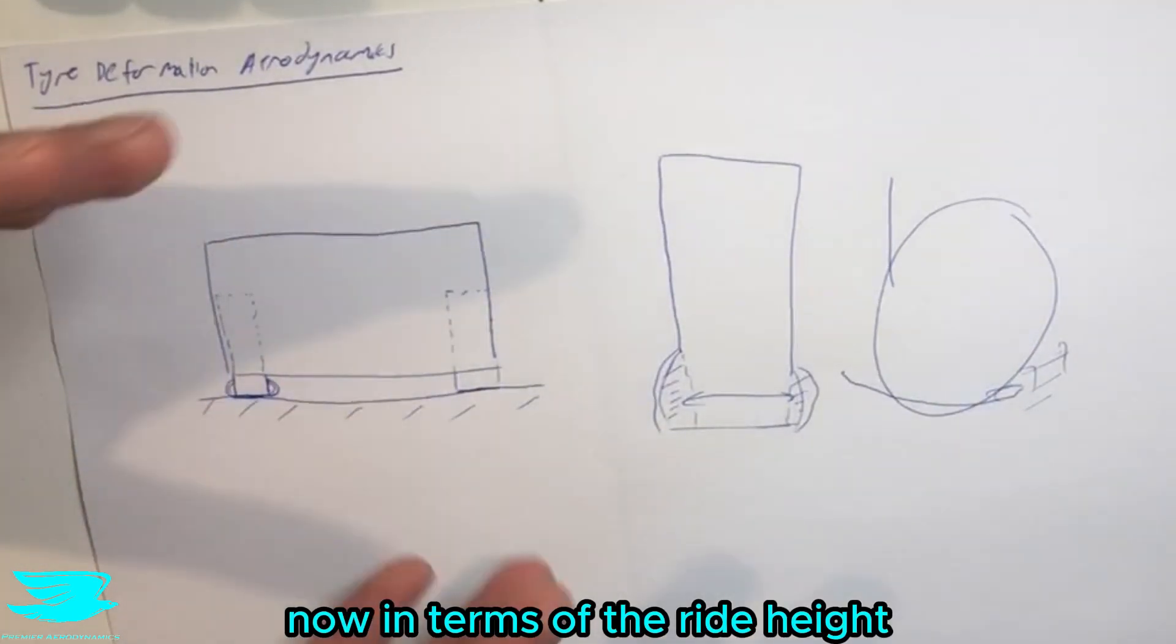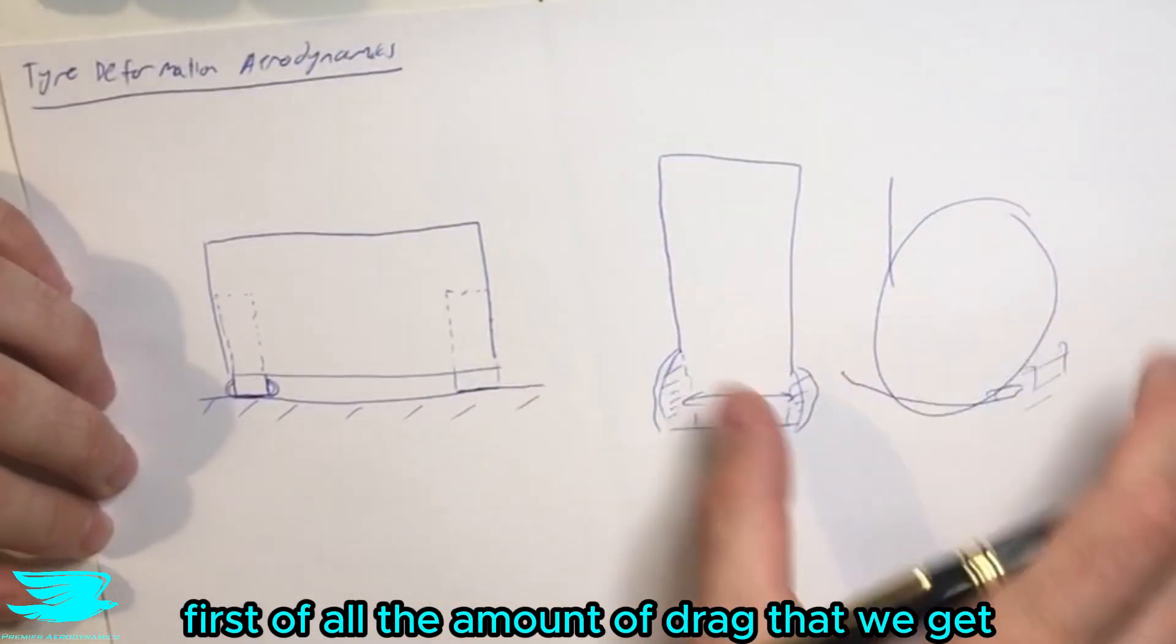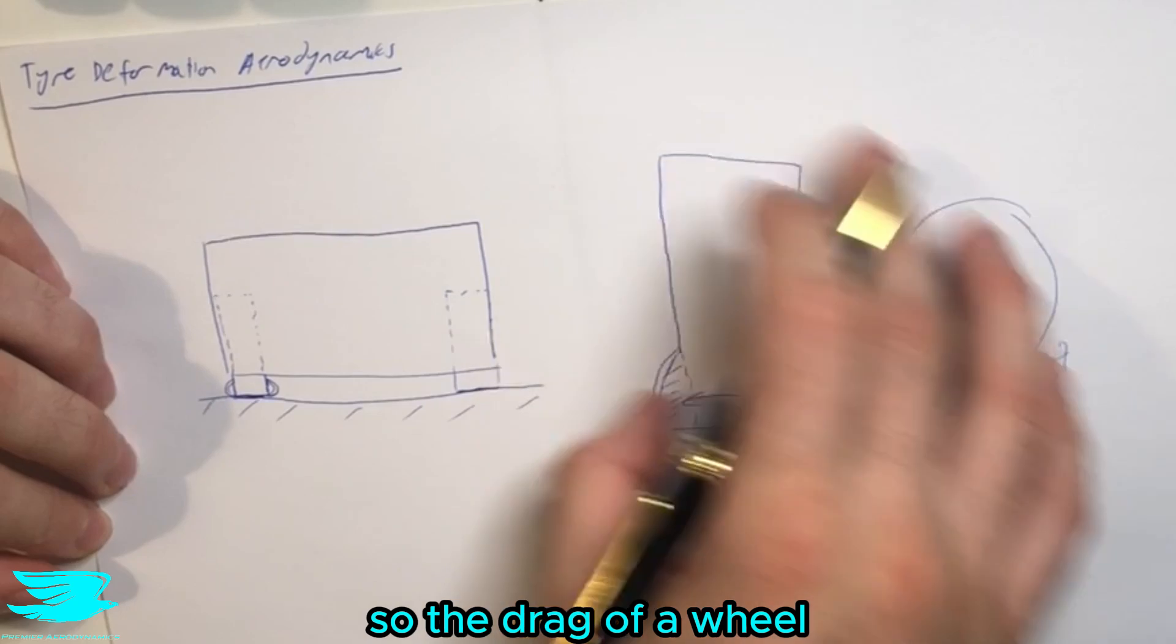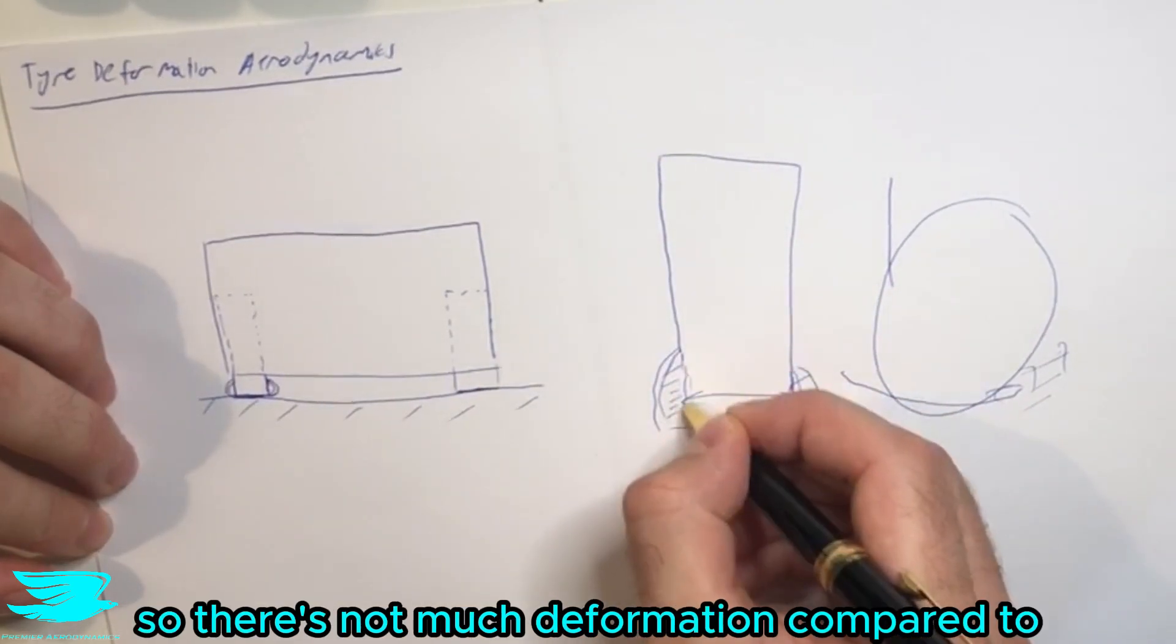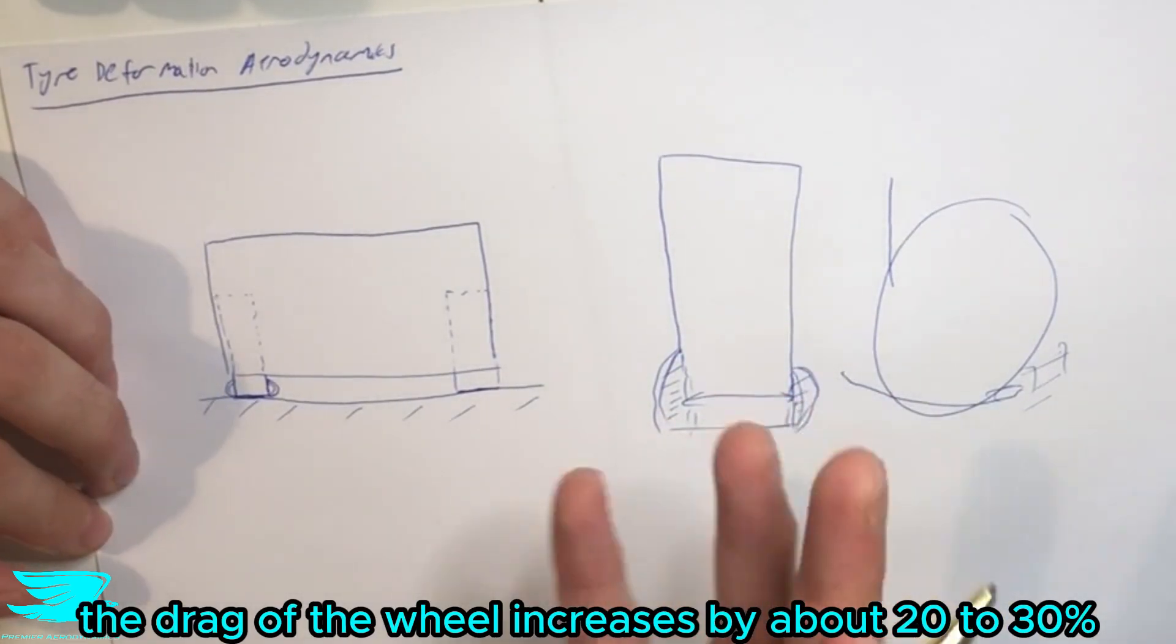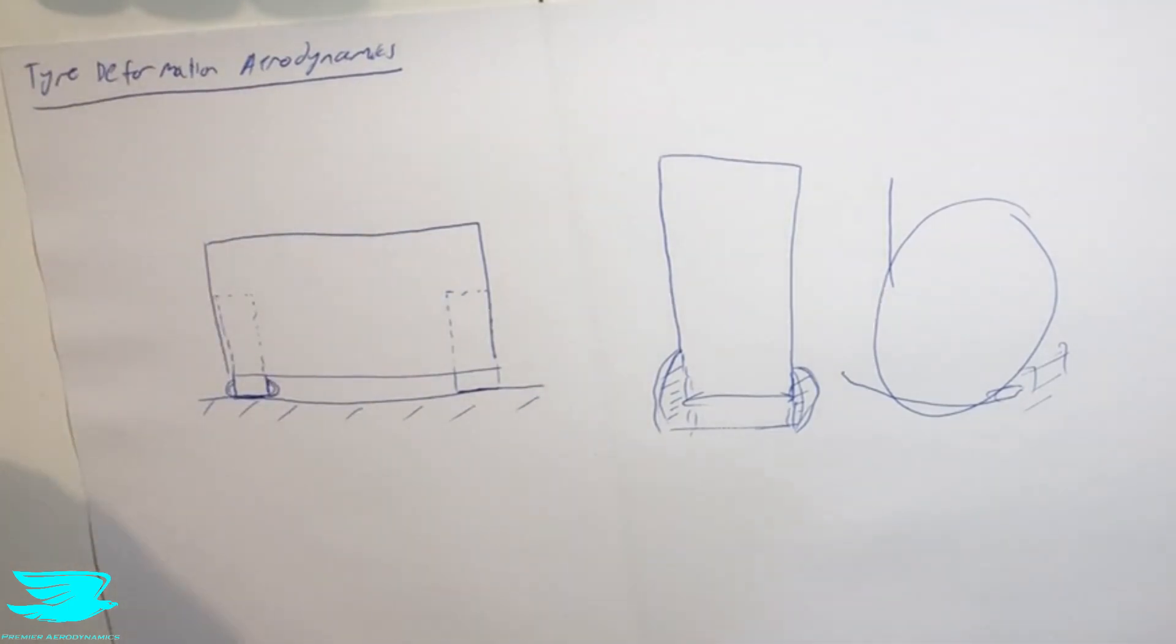Now in terms of the ride height, this is actually quite an interesting phenomenon. Actually, first of all, the amount of drag that we get changing just on the wheels: the drag of a wheel, if you have a very slender wheel so there's not much deformation, compared to really the extreme case, the drag of the wheel will increase by about 20 to 30 percent. So that's quite a lot of drag increase for such a small change.